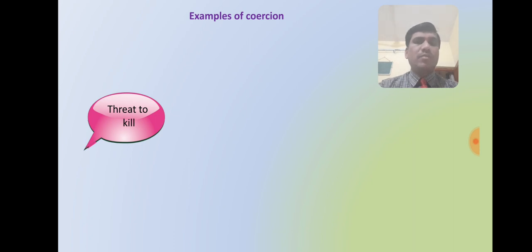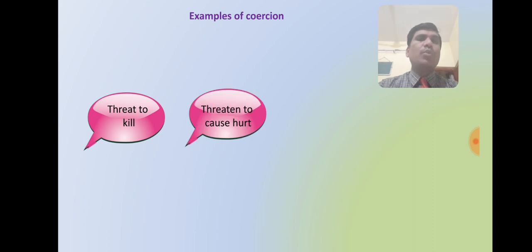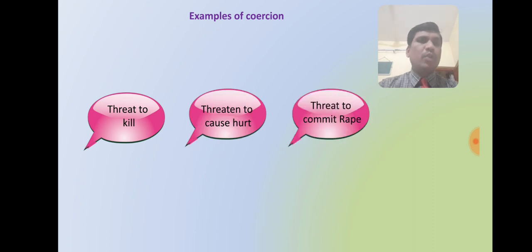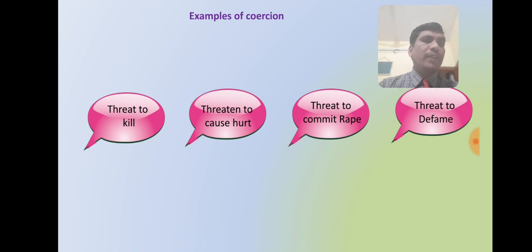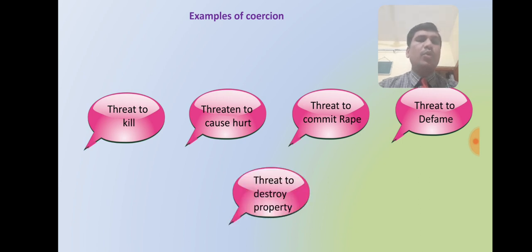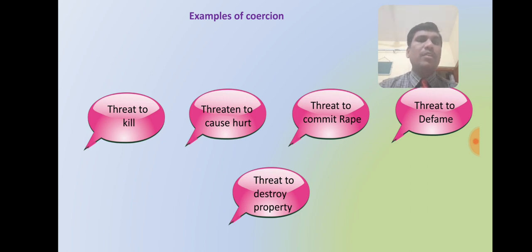Some important examples of coercion include: threat to kill, threat to cause hurt, threat to commit rape, threat to defame, and threat to destroy property. These are examples by which a person may be threatened or coerced, and if so, it is coercion and the consent of the party is not free.